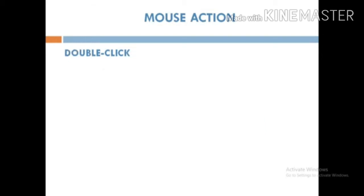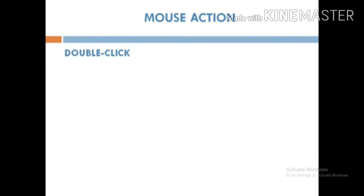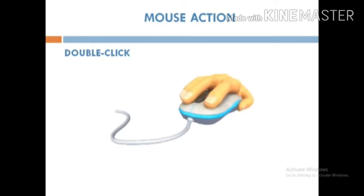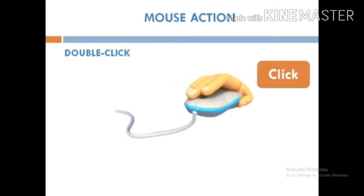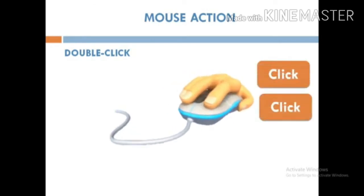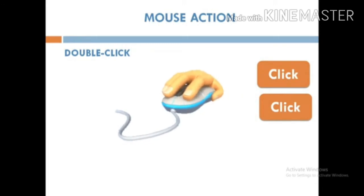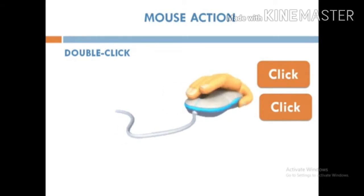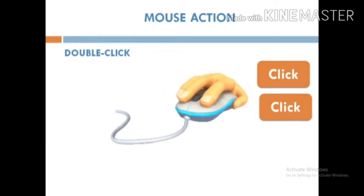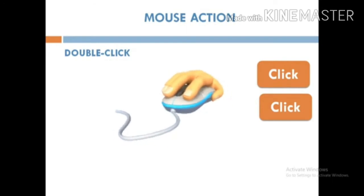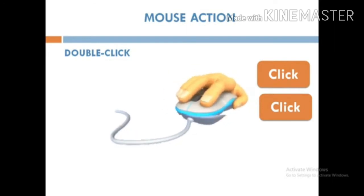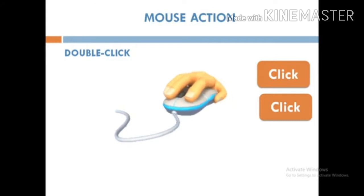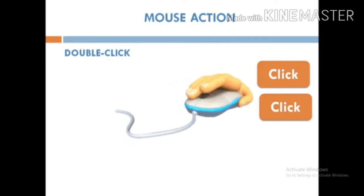Double click means pressing the left mouse button twice quickly. This makes two click sounds and opens an item. Whenever we click the left mouse button two times quickly, we hear click-click — that is a double click. Double click is used to open any item.